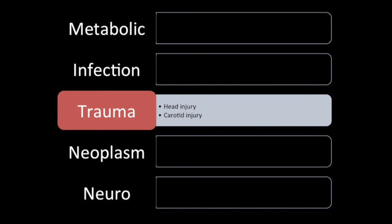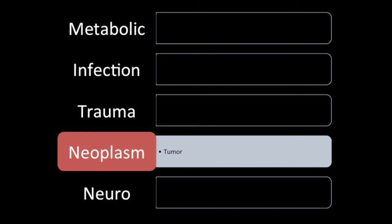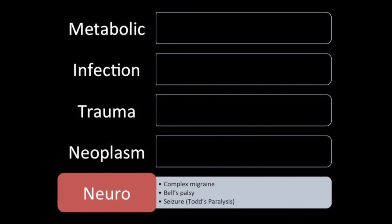Trauma — if the person was just in an MVC and now they're talking weird and can't move their left arm, maybe they had an injury to the carotid or to the brain. Neoplasm — cancers, any type of tumor pushing on the brain or elsewhere. And then a couple of neurological problems: complex migraine. You can't imagine how many patients I've seen where it's just a really bad migraine. Migraines do really weird things.